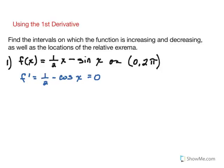So in this case, there is no place that the derivative does not exist. Setting it equal to 0, however, we have a little trig equation to solve: that cosine of x equals 1 half. So if you think of your unit circle and where that occurs, we have x values of pi over 3 and 5 pi over 3. That's where cosine equals 1 half.